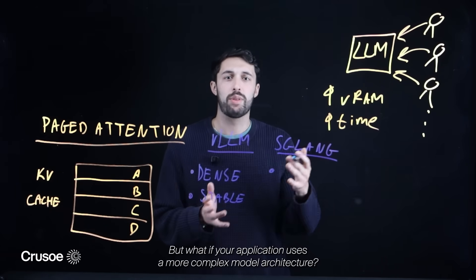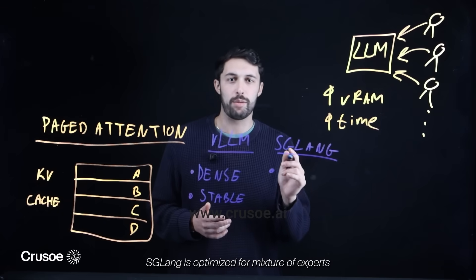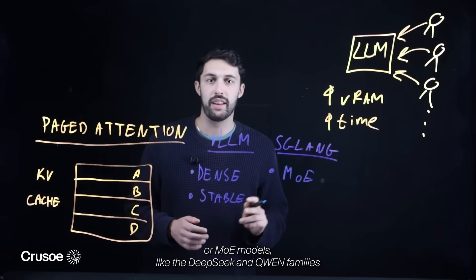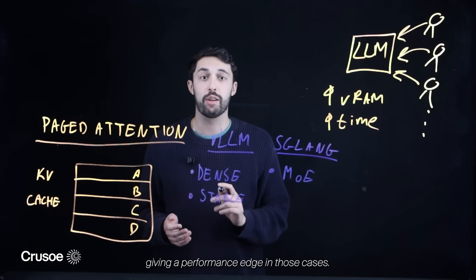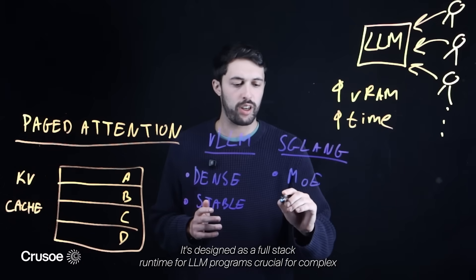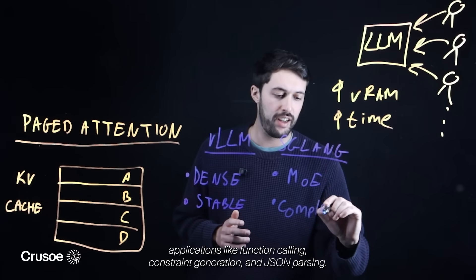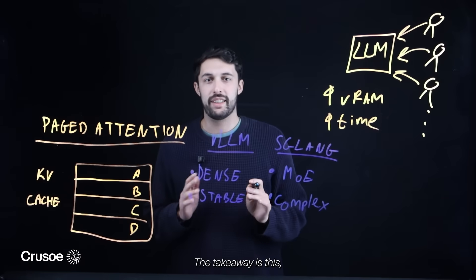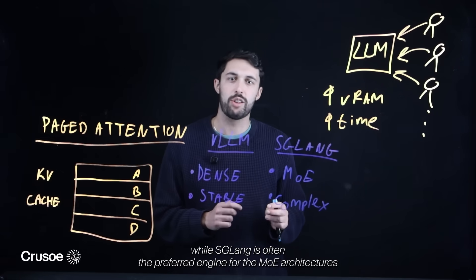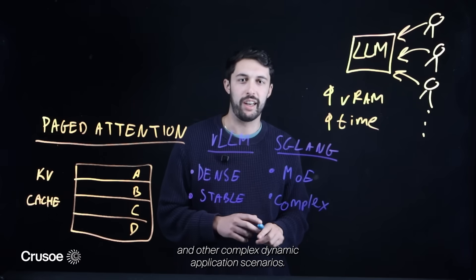But what if your application uses a more complex model architecture? That's where SGLang shines. SGLang is optimized for mixture of experts, or MOE, models like the DeepSeek and Qwen families, giving it a performance edge in those cases. It's designed as a full-stack runtime for LLM programs, crucial for complex applications like function calling, constraint generation, and JSON parsing. The takeaway is this: VLLM is your high-throughput default choice for dense models, while SGLang is often the preferred engine for MOE architectures and other complex dynamic application scenarios.